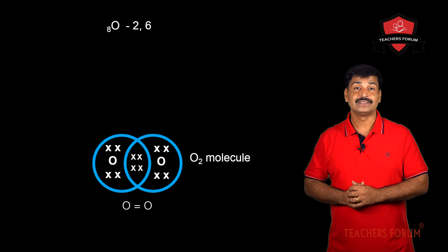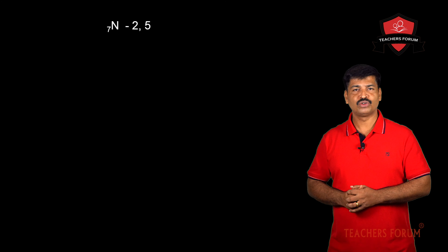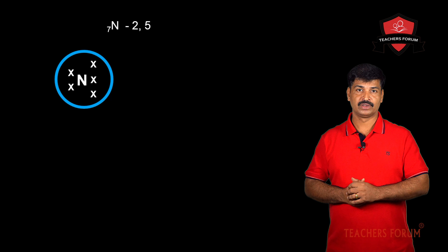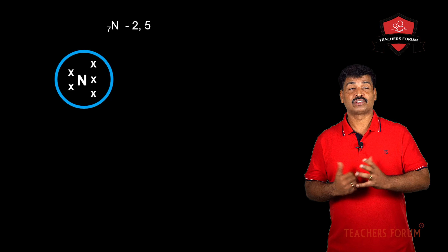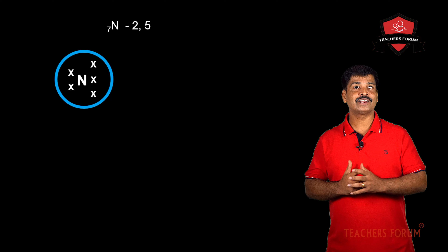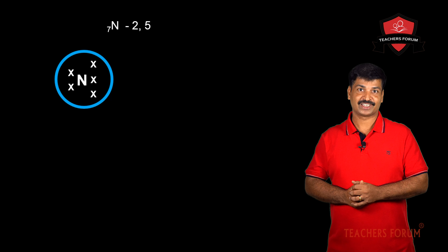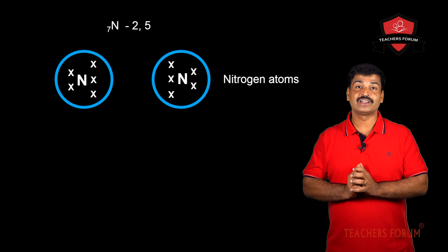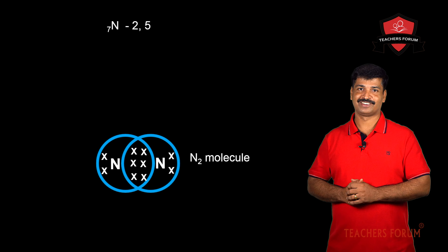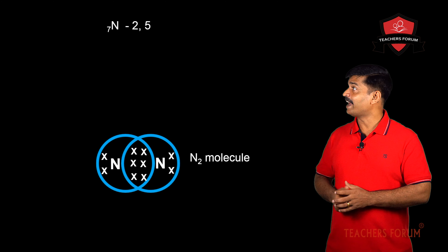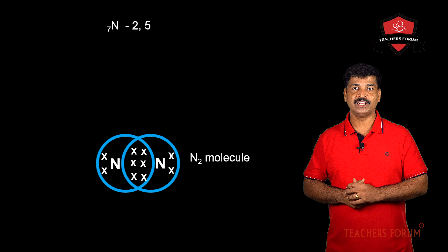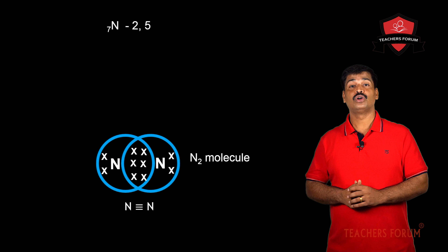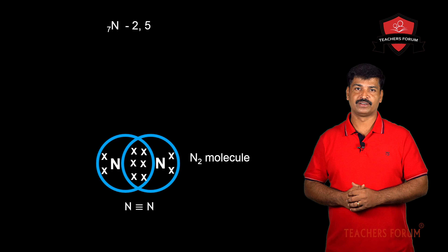Now let us discuss nitrogen. The atomic number of nitrogen is 7, so its electronic configuration is 2,5, giving it 5 electrons in the outermost shell. It requires 3 more electrons for the octet configuration. Two nitrogen atoms come closer and share three electrons with each other. The first nitrogen atom will have 8 electrons and the second also will have 8 electrons. Six electrons — that is, three pairs — are shared, so the bond formed between nitrogen atoms is a triple bond.